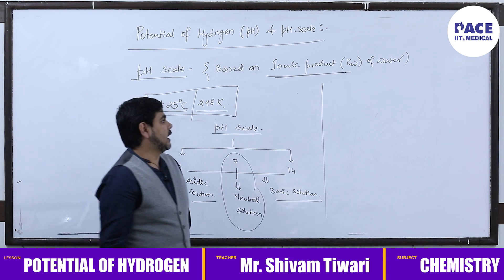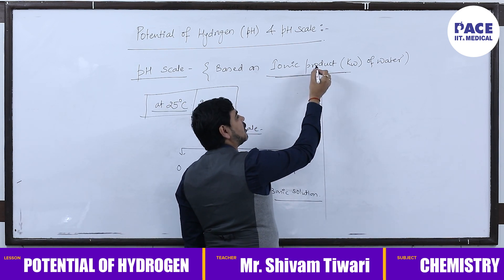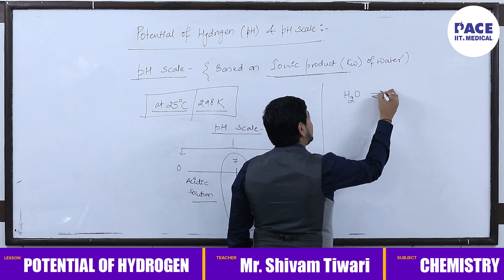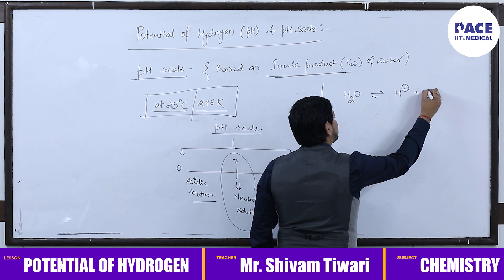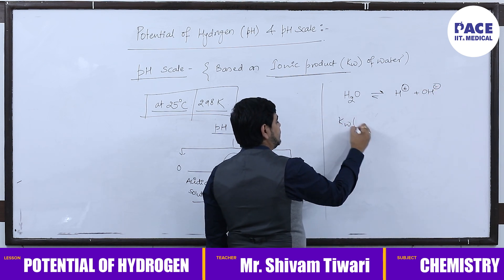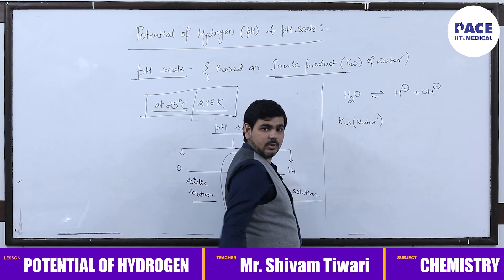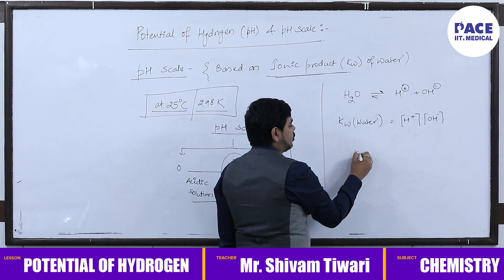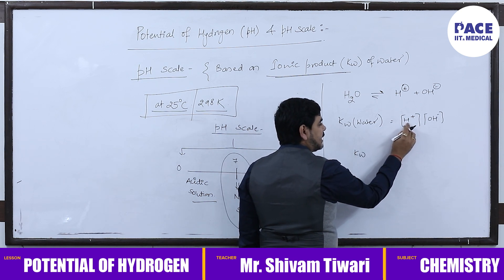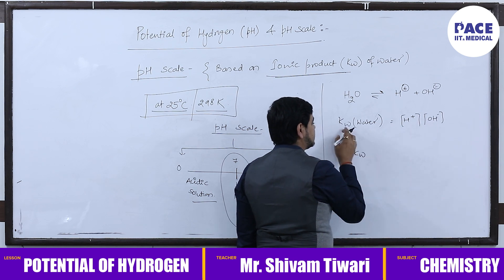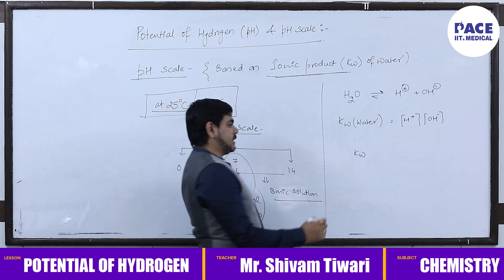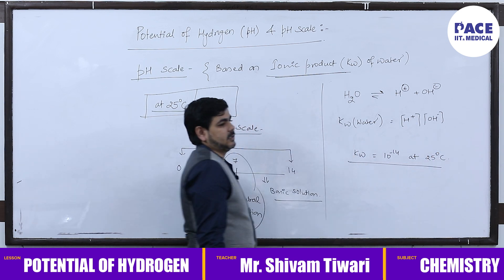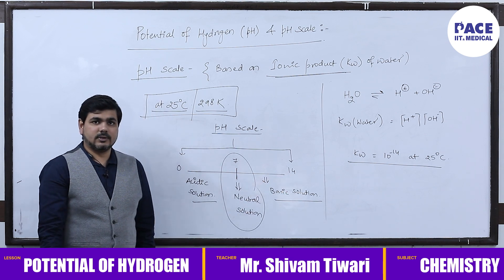The pH scale changes because it is based on the ionic product. The ionic product simply means the product of concentrations of ions. Water breaks into H⁺ and OH⁻. The ionic product of water, represented by Kw, is nothing but the concentration of H⁺ ion multiplied by the concentration of OH⁻ ion. This Kw equals 10⁻¹⁴ at 25°C, and that is why the pH scale ranges from 0 to 14.